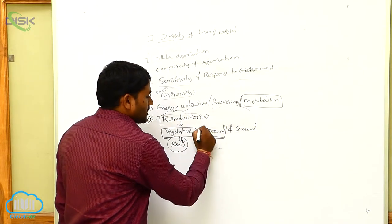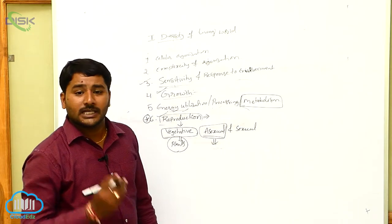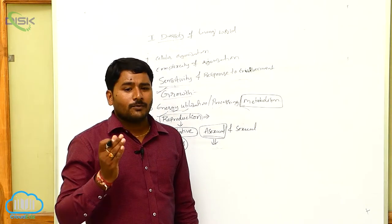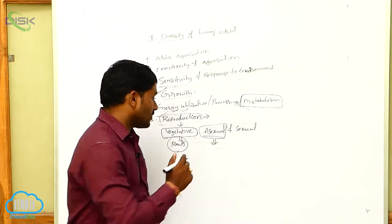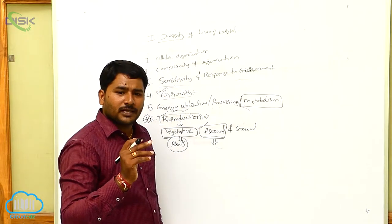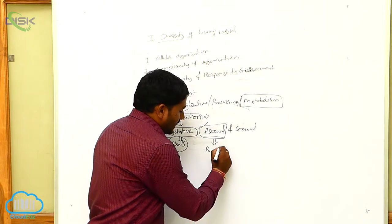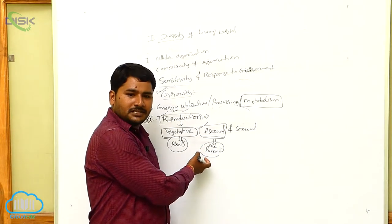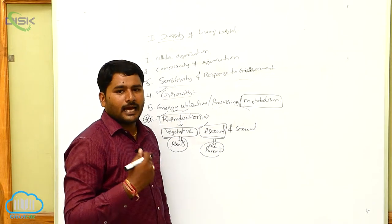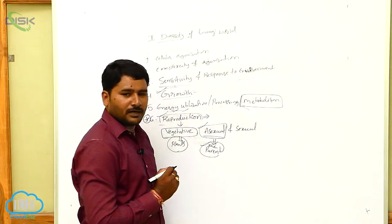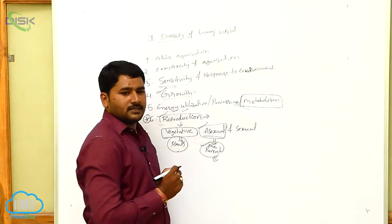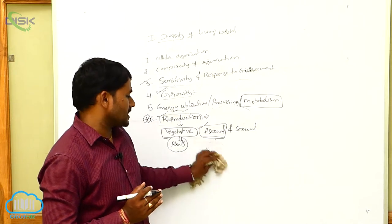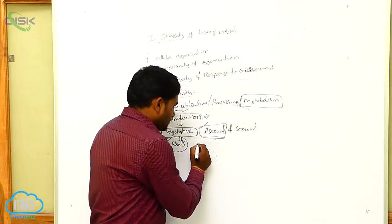Asexual reproduction occurs without the formation or fusion of gametes. In asexual reproduction, only one parent participates. This parent does not form any gametes and there is no process of gamete fusion. Due to single parent participation, there are no new traits and no new genetical recombinations in the progeny. There are different types of asexual reproduction.